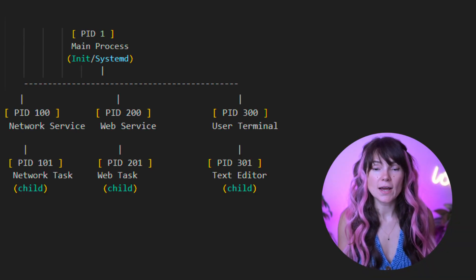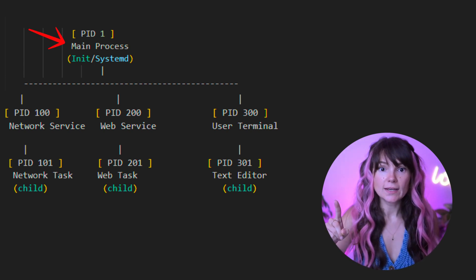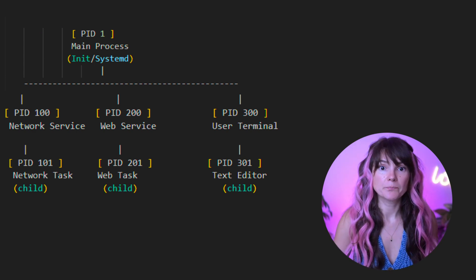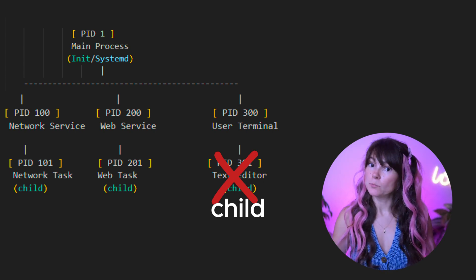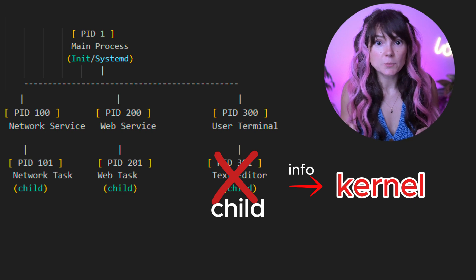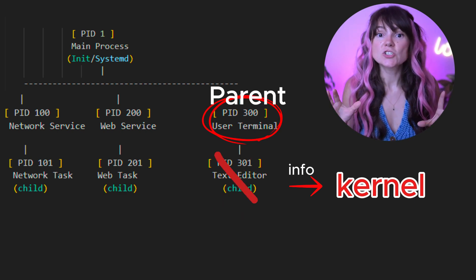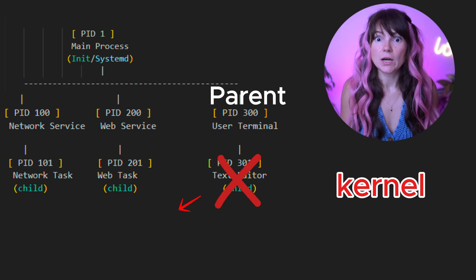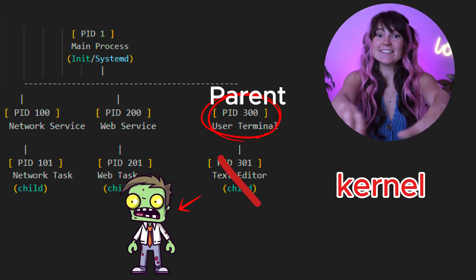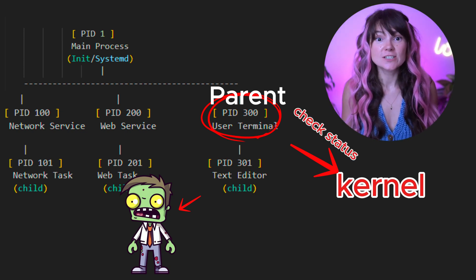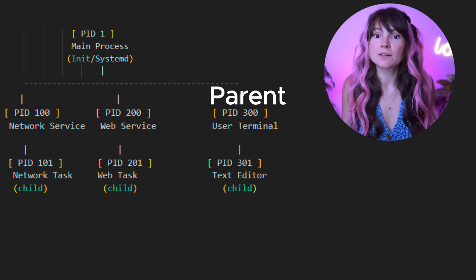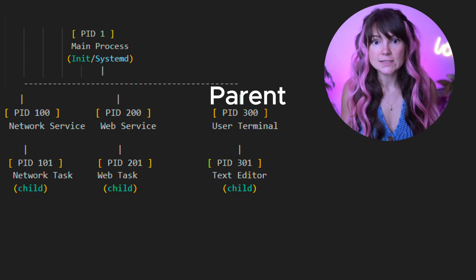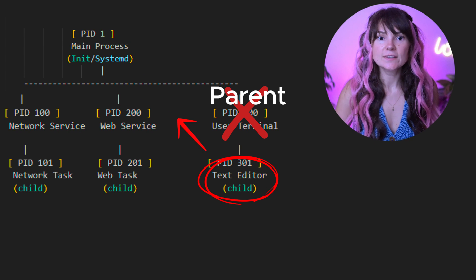In Linux, processes form a strict hierarchy known as a process tree. The process tree is rooted at the first process, known as the init process, which is typically the init program. When a process ends, it isn't instantly removed from the system. Instead, the kernel retains some of its information and memory so that the parent process can check its status after termination — this is referred to as waiting on the terminated process. When the process terminates, it becomes a zombie until its parent inquires about its status, ensuring no terminated processes hang around forever. If the parent process terminates before its child, the child is assigned to the init process.